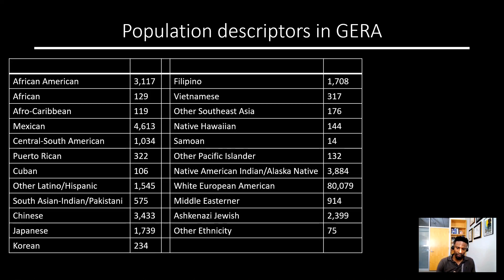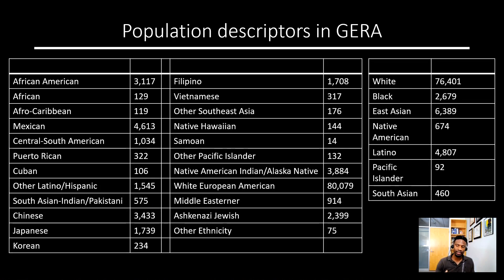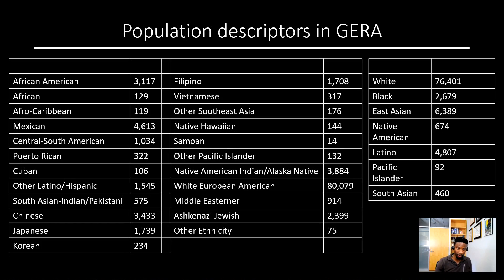Participants were given 23 options and were asked to select any groups which applied to them. You can see the numbers — there was also an 'other' category where participants who selected it could specify in free form. We also have self-reported race/ethnicity data as shown. Participants could select more than one option for either of these descriptors. Notice the uneven numbers across the groups — for example, we have only 14 participants who consider themselves Samoan. So we have to work with the numbers that we get.